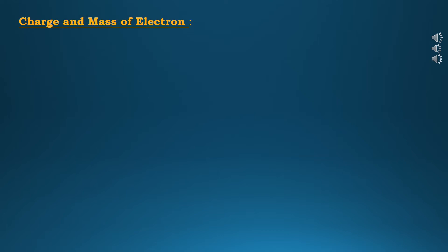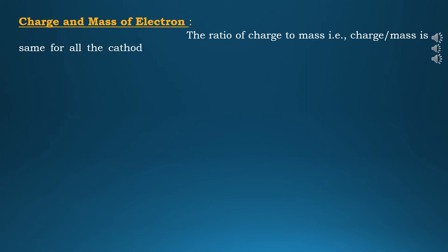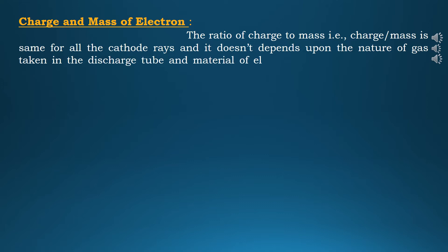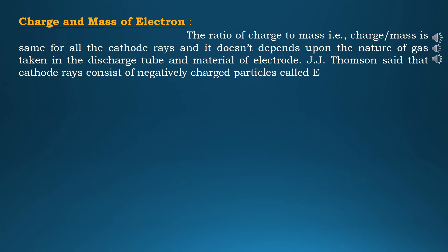Now let's discuss the charge and mass of the electron. J.J. Thomson determined the ratio of the charge of the electron to its mass by measuring the deflection under the simultaneous influence of electric and magnetic fields applied perpendicular to each other. The ratio of charge to mass is the same for all cathode rays and does not depend upon the nature of the gas taken in the discharge tube or the material of the electrode. Thomson concluded that cathode rays consist of negatively charged particles called electrons. The charge over mass ratio, e/m, comes out to be 1.76 × 10¹¹ coulombs per kilogram.